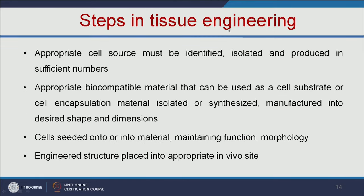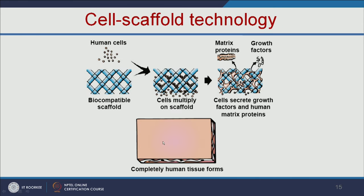The steps in tissue engineering are: first, select a suitable cell source; then select a suitable scaffold; add the cells onto the scaffold and grow them. Once the cells are ready, transplant them into the human body. You add human cells to a biocompatible scaffold, the cells multiply, and you add growth factors or matrix proteins. The cells secrete growth factors and human matrix proteins, and it becomes a complete human tissue.